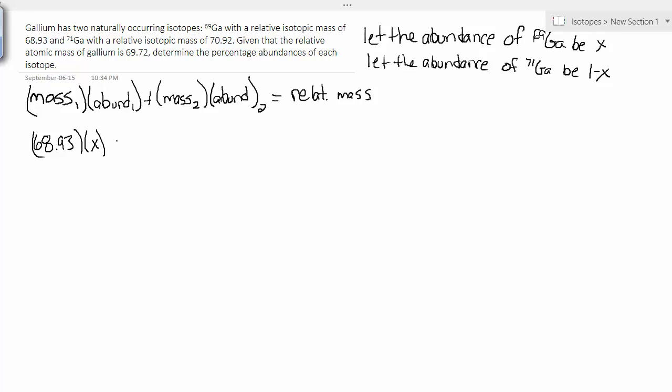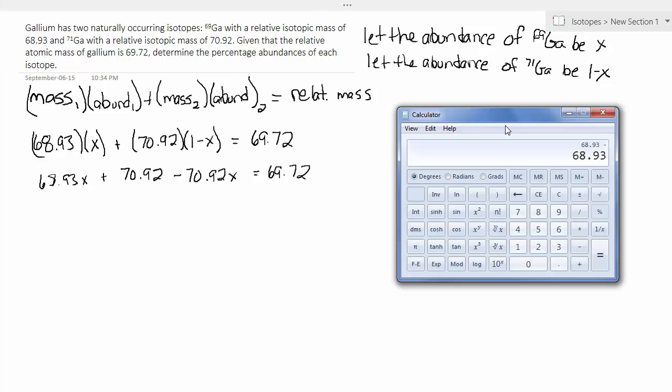So 68.93 times x plus 70.92 times (1 minus x) is equal to 69.72. It may look a little bit ugly, but this is now just a simple rearrange and solve for x type scenario. So 68.93x plus 70.92 minus 70.92x is equal to 69.72. We're going to collect like terms and solve.